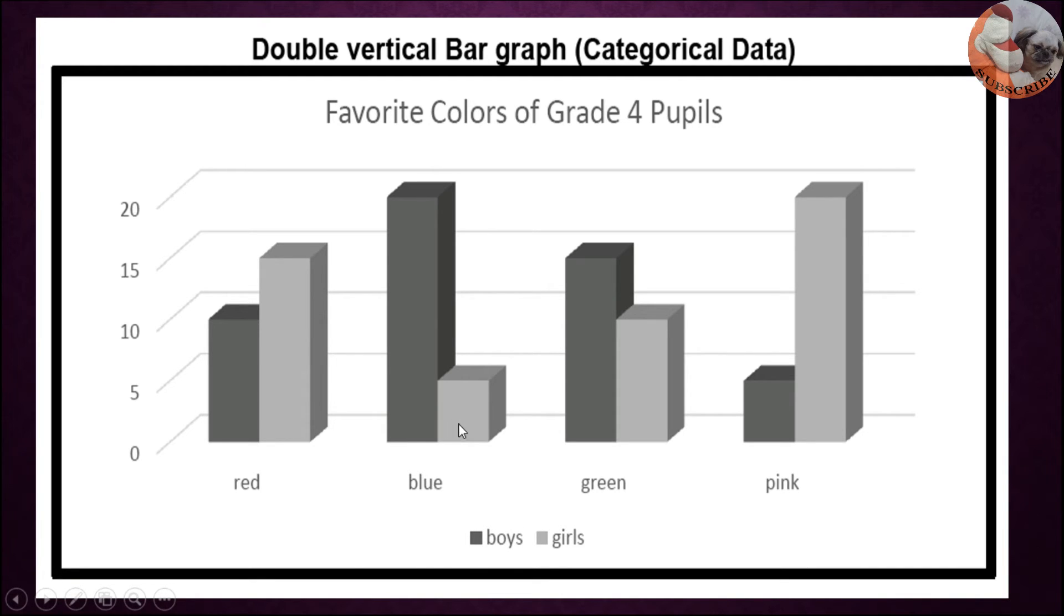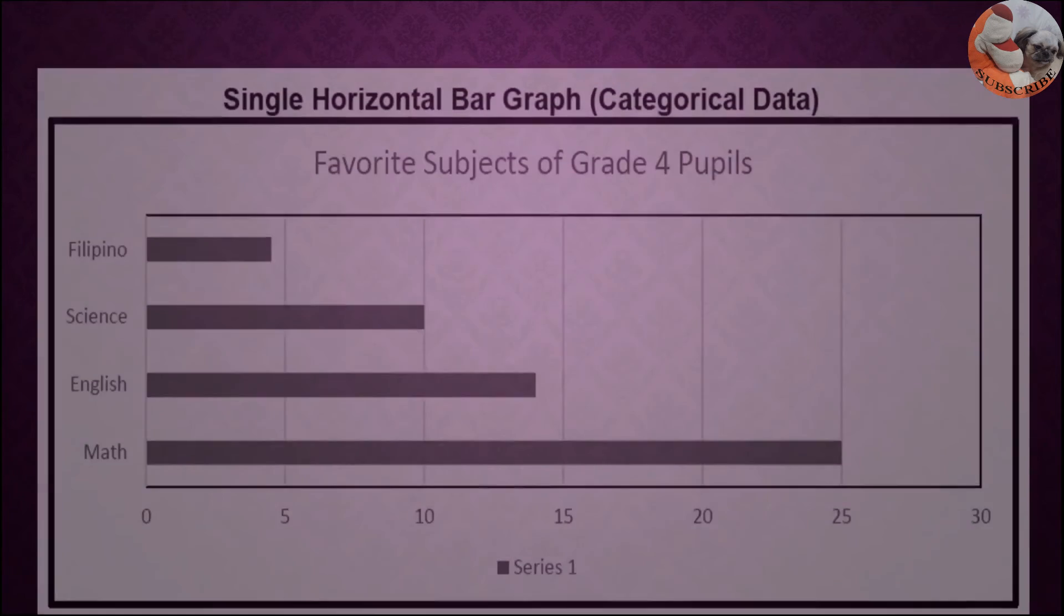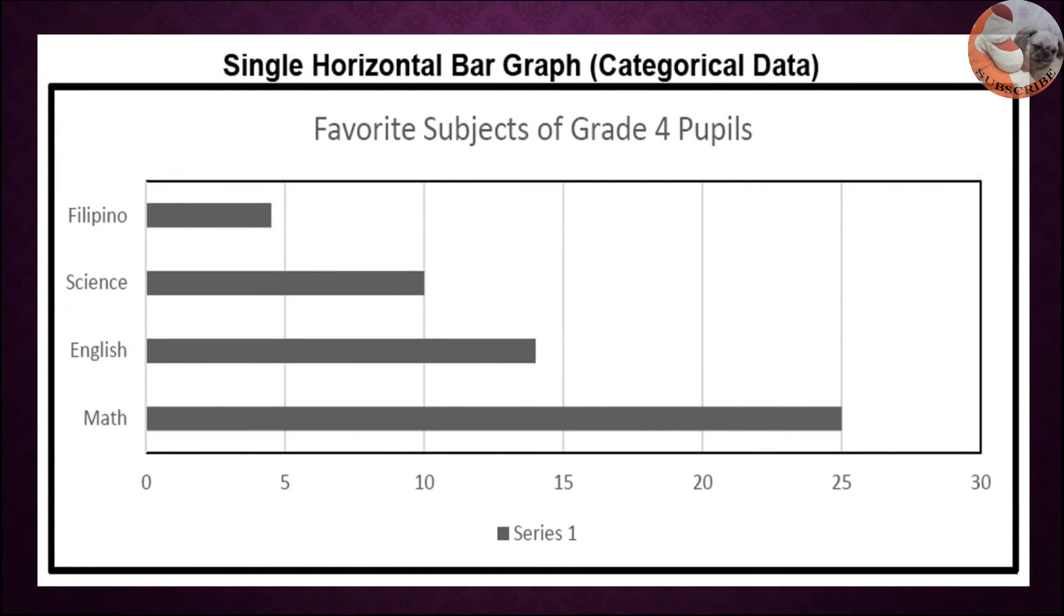Then we have single horizontal bar graph. The title of the bar graph is favorite subjects of grade 4 pupils. Here are the subjects and here are the data represented in horizontal bar. That is why it is called a single horizontal bar graph.